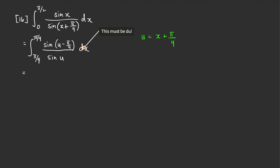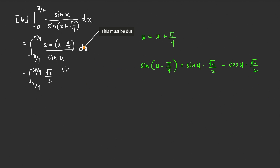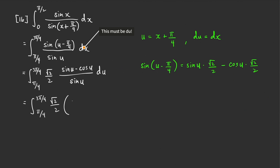Now we apply the sine difference identity to sin(u − π/4): this equals sin(u)·cos(π/4) minus cos(u)·sin(π/4), which is sin(u)·(√2/2) minus cos(u)·(√2/2). So the integral becomes the integral from π/4 to 3π/4 of (√2/2)·(sin(u) − cos(u)) over sin(u) du. Separating into two fractions gives (√2/2) times the integral of (1 − cot(u)) du.